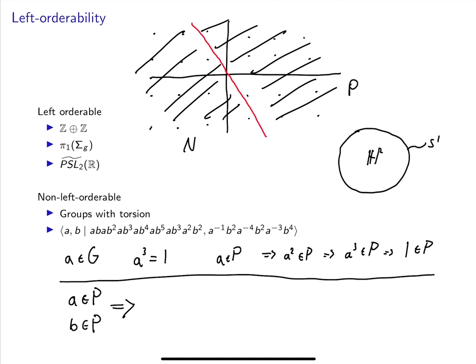Well, in this case, that would imply that relator 1 is in the positive cone, and we can't have that because relator 1 is equal to the identity. On the other hand, suppose that a is in the negative cone and b is in the positive cone. That implies that a inverse is in the positive cone, which implies that relator 2 is in the positive cone. This also violates left orderability because relator 2 is equal to the identity. The other two cases are similar, so this group can't be left orderable.